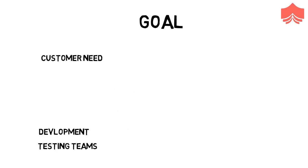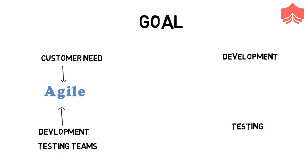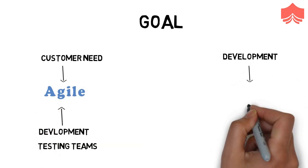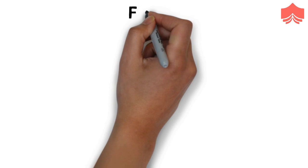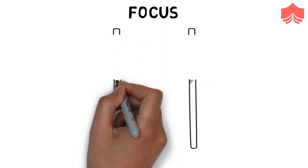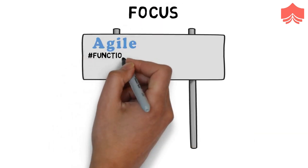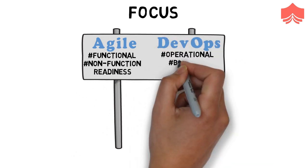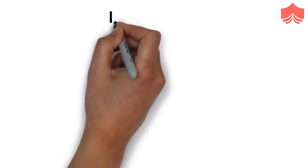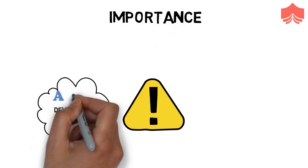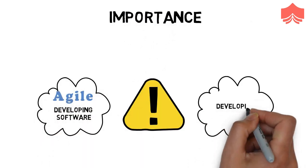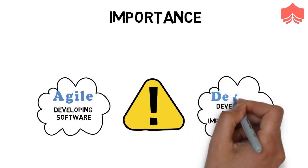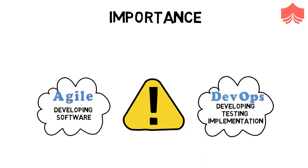Goal. Agile addresses the gap between customer need and development and testing teams. DevOps addresses the gap between development, testing, and operations. Focus. Agile focuses on functional and non-functional readiness. DevOps focuses more on operational and business readiness. Importance. Developing software is inherent to Agile. Developing, testing, and implementation are all equally important in DevOps.